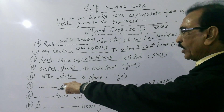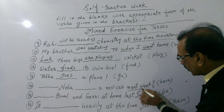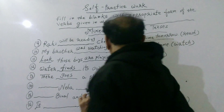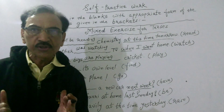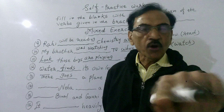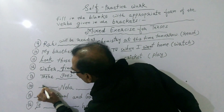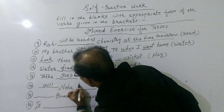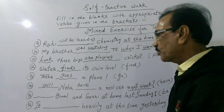Sentence 14: Dash Neha dash a new car next week. 'Next week' denotes simple future tense. The verb 'have' is given in the bracket. For simple future tense, the formula is: shall or will plus basic form of the verb. Neha is third person singular, so we use 'will'. The correct answer is: Neha will have a new car next week.